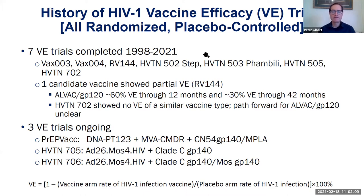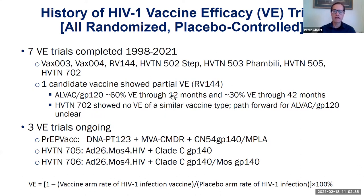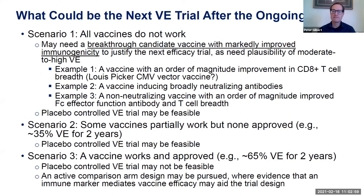Now let's move to HIV vaccine VE trials. There have been seven vaccine VE trials completed over about a 20-plus year period. No vaccines are approved; one vaccine showed partial efficacy — that was an ALVAC/gp120 platform vaccine — and it's not clear what the path forward for that platform could be, given that another VE trial, 702, did not show efficacy of that vaccine type. There are three ongoing vaccine trials: PREP VAC, which Sheila talked about, and 705 and 706, which are partnerships between Janssen and the HVTN for Ad26 vector platform vaccines.